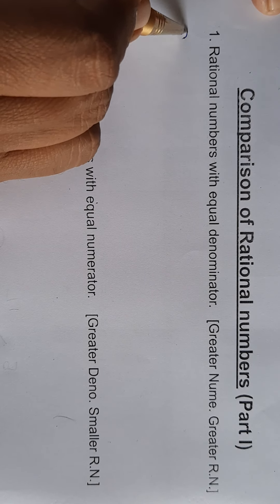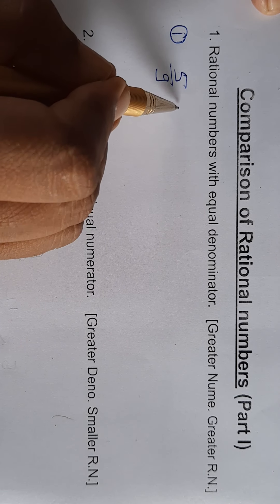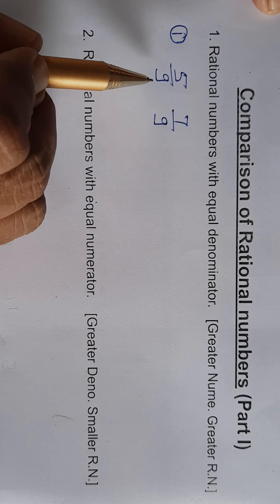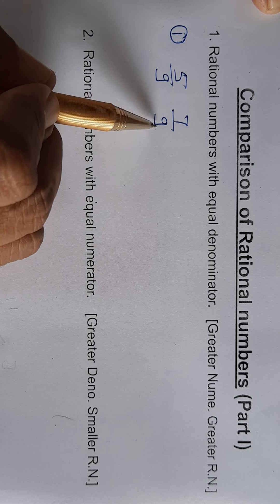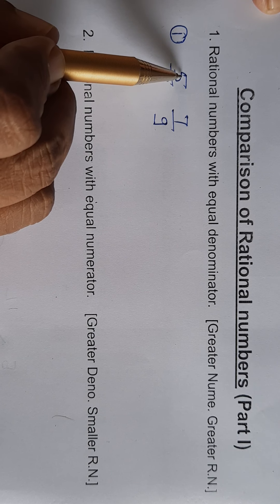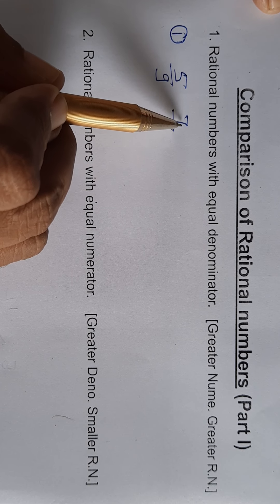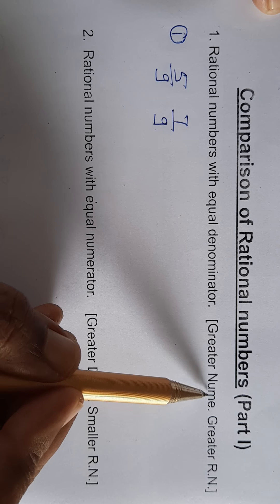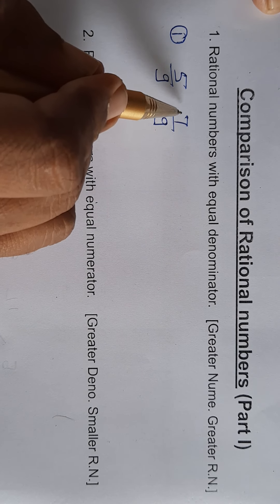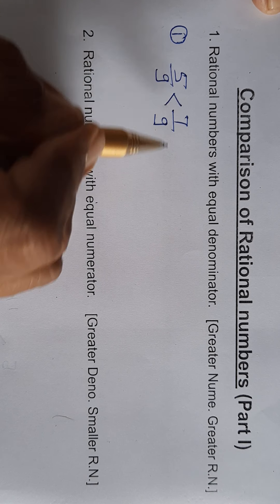For example, 5 upon 9 and 7 upon 9. The denominators are equal, so look at the numerators: 5 and 7. Since 7 is greater, the greater numerator is the greater rational number. Therefore, 7 upon 9 is the greater rational number.